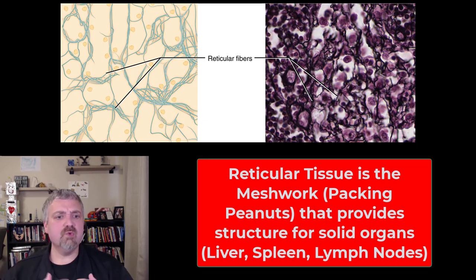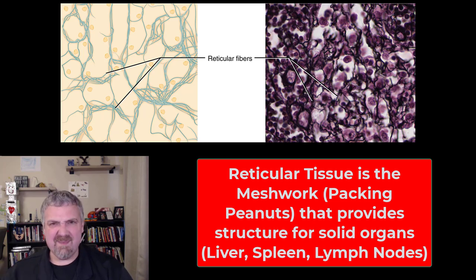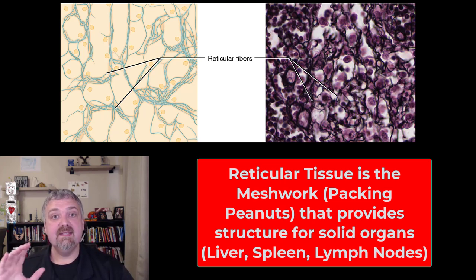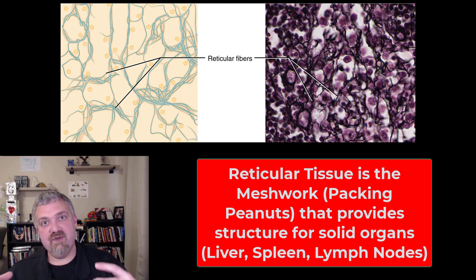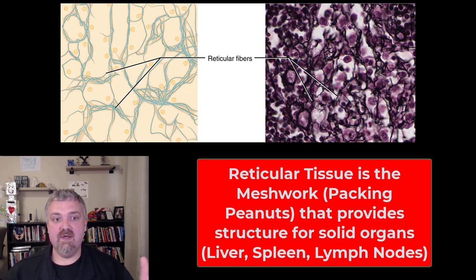Next we have reticular tissue. The word reticulum means 'little net' in Latin, so reticular tissue looks like a meshwork of supportive fibers called stroma. These supportive fibers support the actual functional cells called the parenchyma. I think of reticular fibers like packing peanuts — it's the framework that solid organs are built on. The functional cells like liver cells are built on reticular tissue. Spleen, liver, lymph nodes, and bone marrow all have reticular tissue.